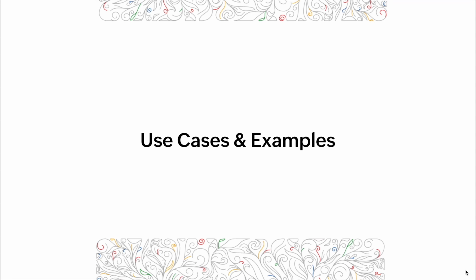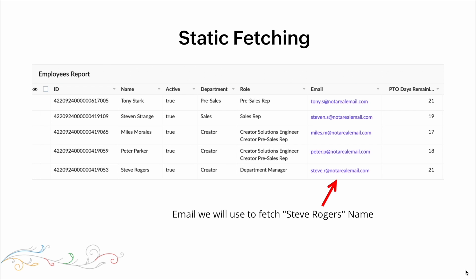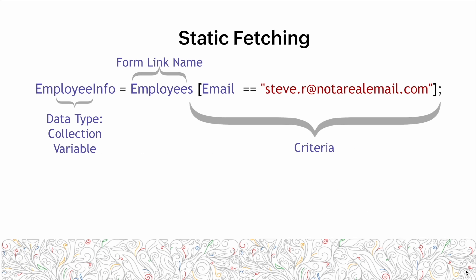Let's look at some use cases and examples. Static fetching. Here's an example: we have a table with some records, and we're going to use the email field. We're going to use a fetch command to fetch the records for Steve Rogers' name. We have employee info as our collection variable, employees as our form link name, and for the criteria, we're fetching any record with an email value equal to that email address.